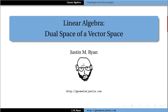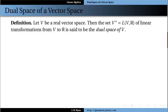Hello, and welcome back to lectures on linear algebra. In this video, I'd like to briefly discuss the dual space of a vector space. You'll remember in class, we defined the space of linear transformations from one vector space to another. So if we let V be a real vector space — real here just means that the scalars are real as opposed to complex or some other type of number — then we can define the dual space of V to be the set V star of all linear transformations from the vector space V to the real numbers, so to the space of scalars.